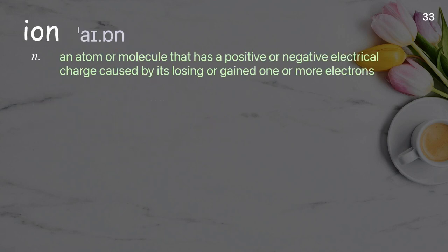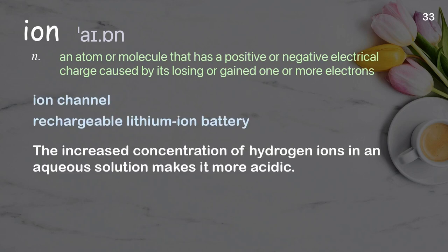Ion: An atom or molecule that has a positive or negative electrical charge, caused by its losing or gaining one or more electrons. Examples: Ion channel. Rechargeable lithium-ion battery. The increased concentration of hydrogen ions in an aqueous solution makes it more acidic.